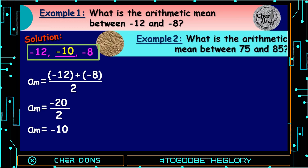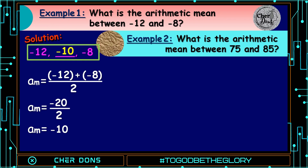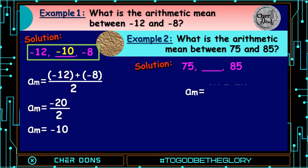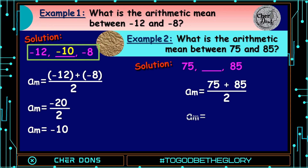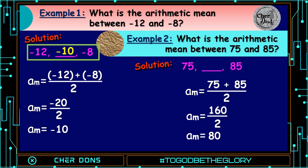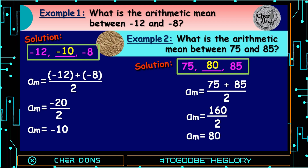Example number 2: What is the arithmetic mean between 75 and 85? 75 plus 85 divided by 2 is equal to 160 divided by 2, that is equal to 80. So the terms are 75, 80, and 85.